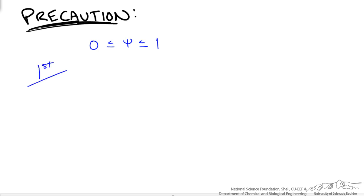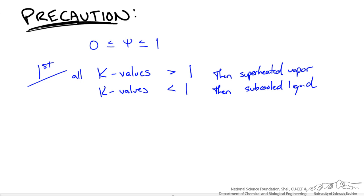Now our first sanity check is to check all the k values for each of the components. So if we have 5 components in a system and all k values are greater than 1, then we have a superheated vapor. It is just the opposite. If we have all k values less than 1, then we have a subcooled liquid. So to have phase equilibrium between the vapor and the liquid phase, we have to have some k values above 1 and some k values below 1.